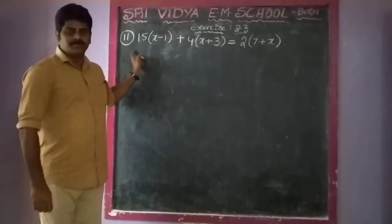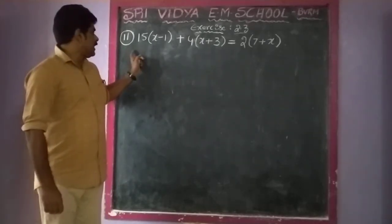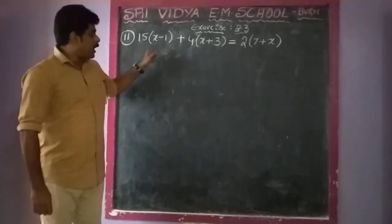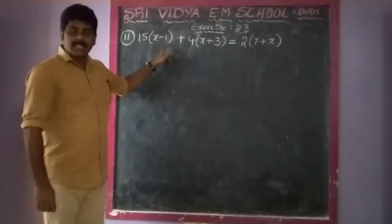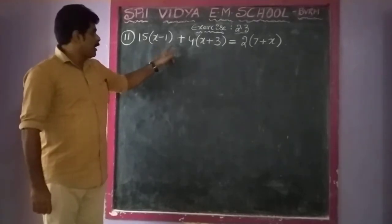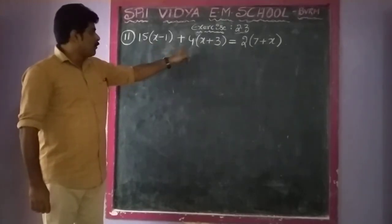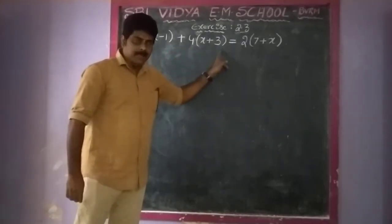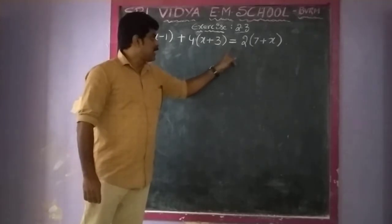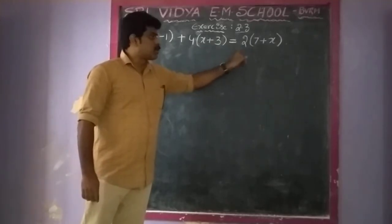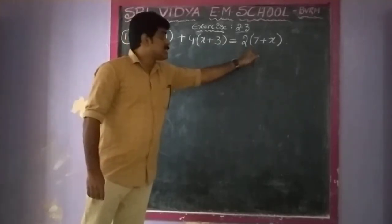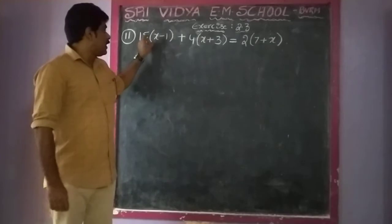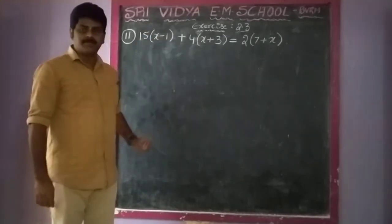Sum 11. What is Sum 11? 15 of (x minus 1) plus 4 of (x plus 3) is equal to 2 of (7 plus x). We need to find the value of x.